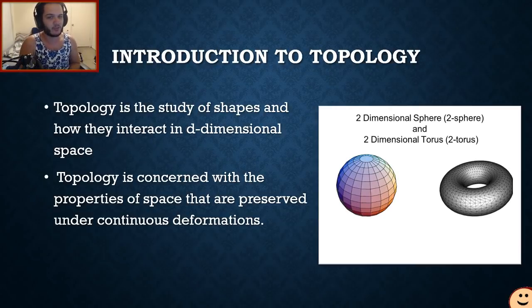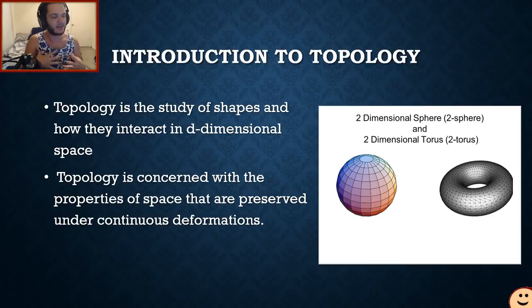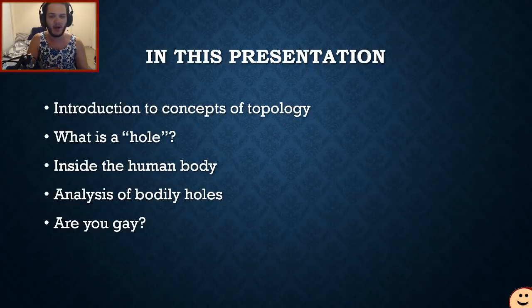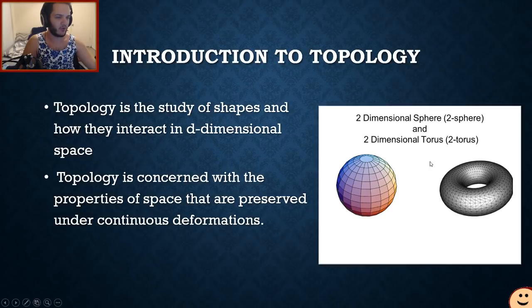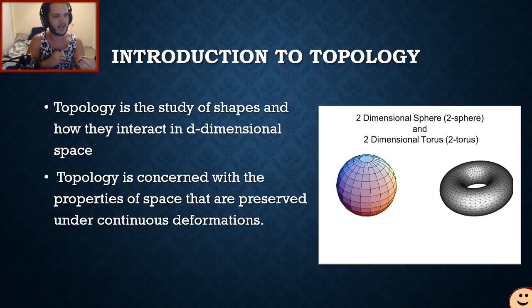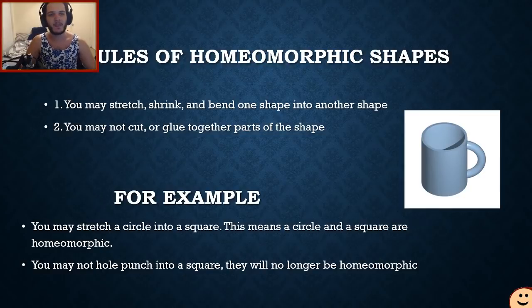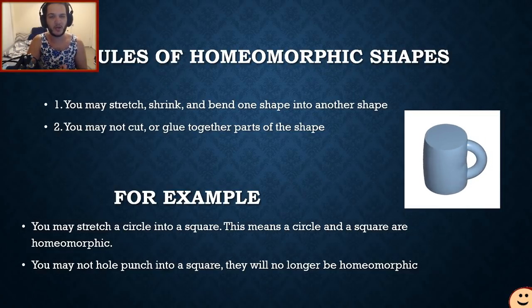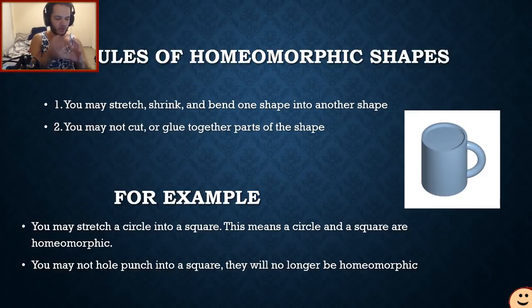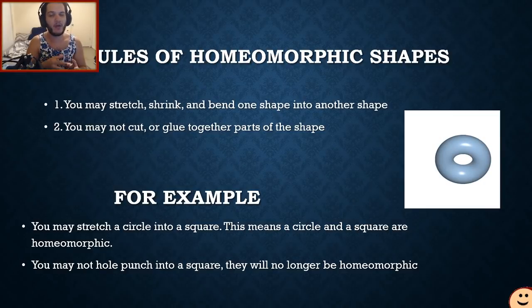Topology is the study of shapes and how they interact in D-dimensional space, D being any number of dimensions. Topology is specifically concerned with what properties a shape has if you were to contort it in ways that follow certain rule sets. The rules we're going to follow are called the rules of homeomorphic shapes: you are allowed to stretch, shrink, bend, contort, and twist any way that you want.